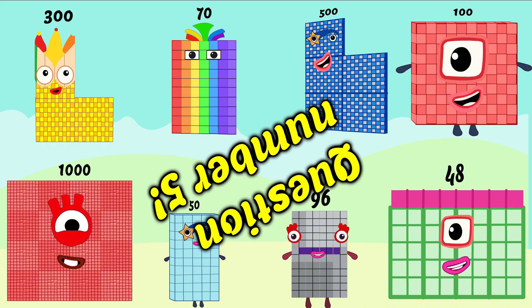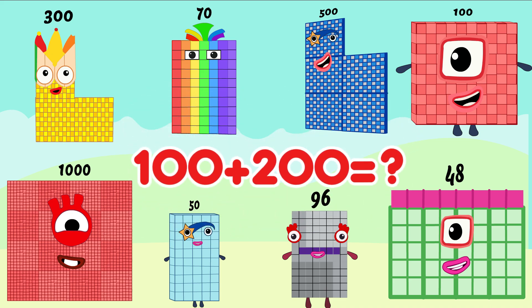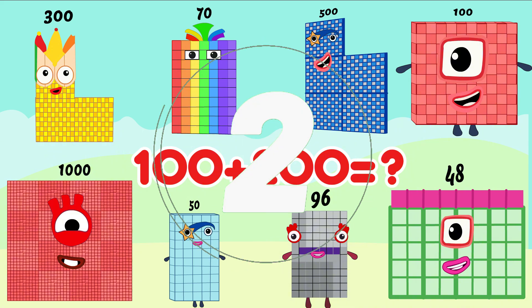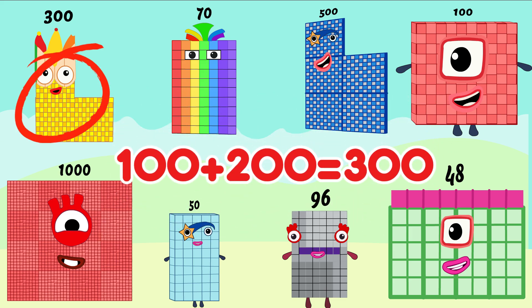Question number 5. 100 plus 200 is equal. Is correct answer. 100 plus 200 is equal 300.